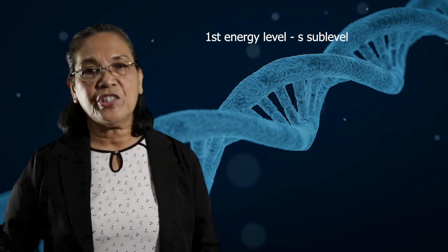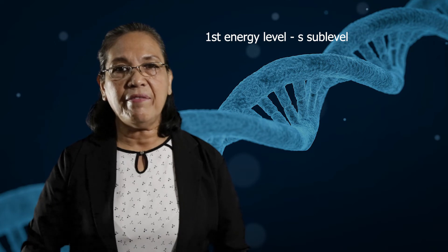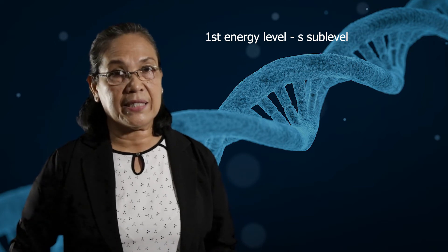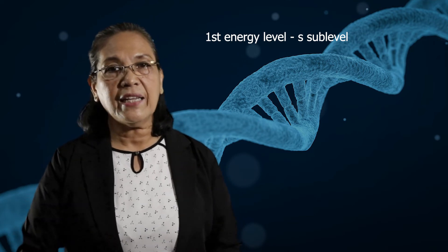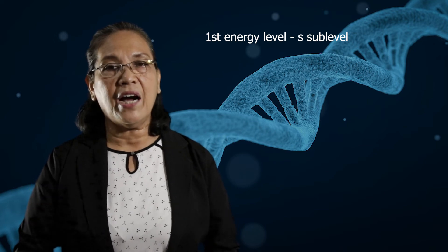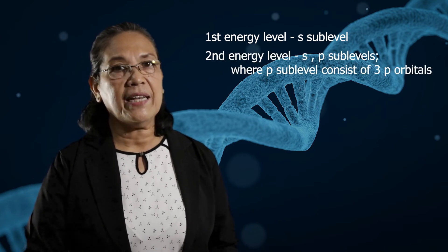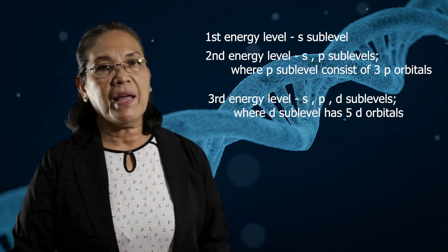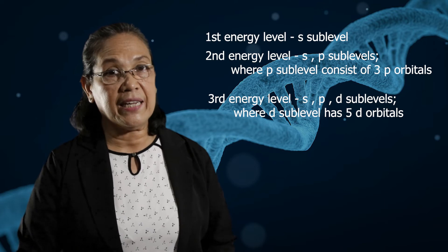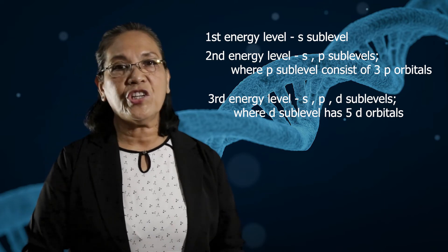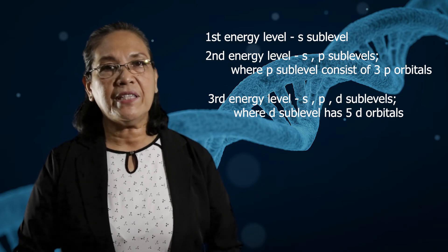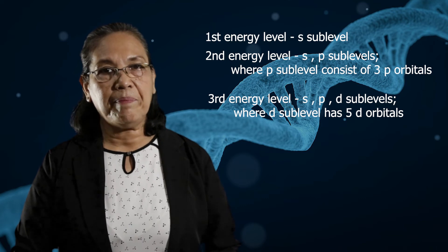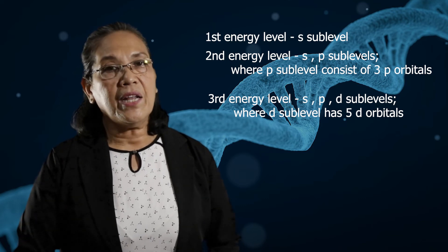Now, each energy level has sub-levels. For the first energy level, the sub-level is S. In the second energy level, the sub-levels are S and P. In the third energy level, the sub-levels are S, P, and D. In the fourth energy level, the sub-levels are S, P, D, and F.